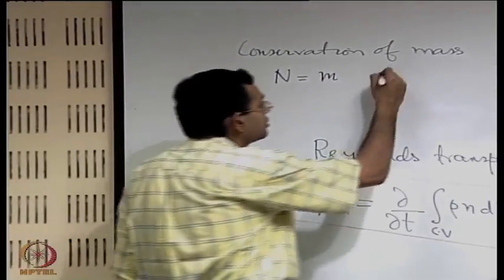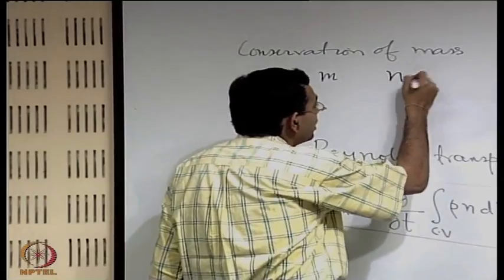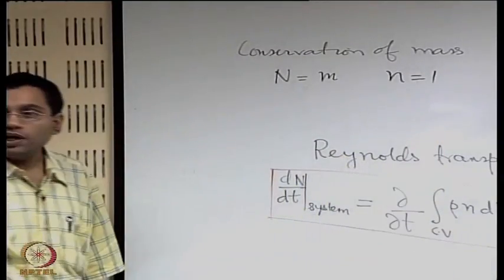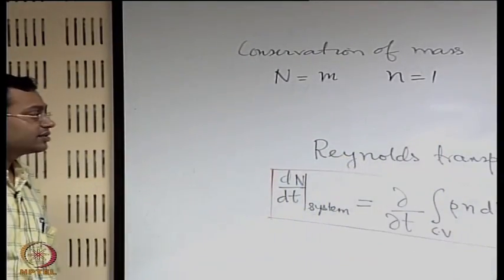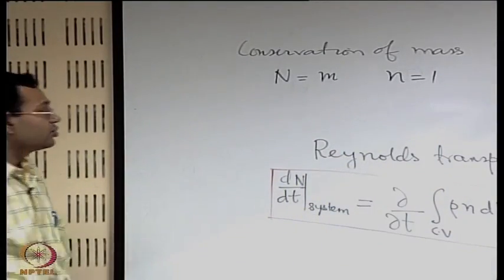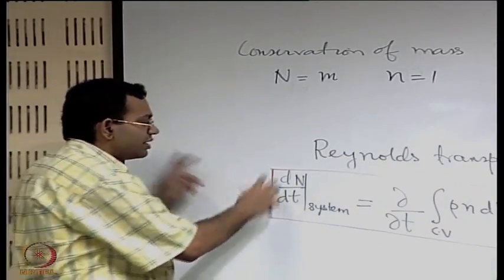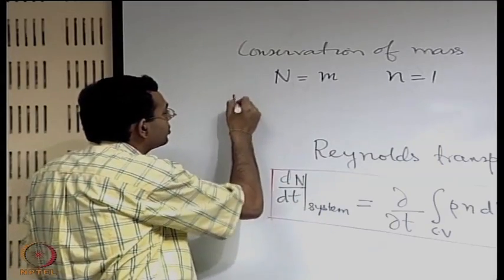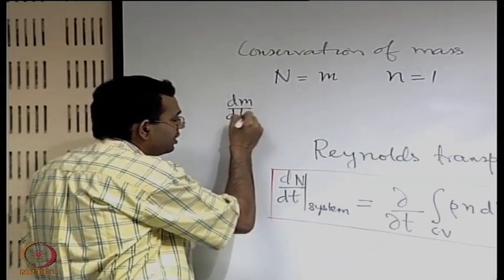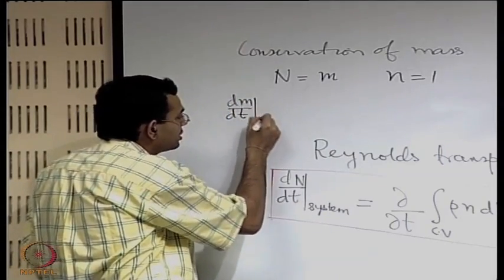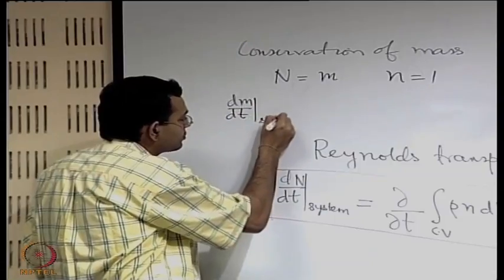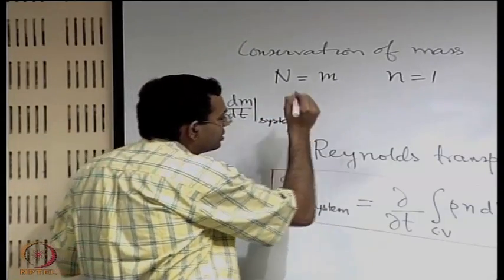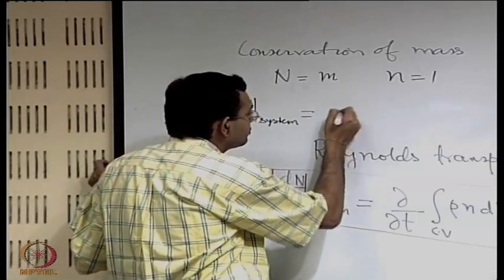So what is small n? It is N per unit mass. So let us substitute that in the Reynolds transport theorem and write dm/dt for the system.